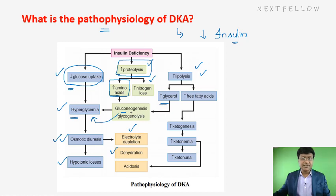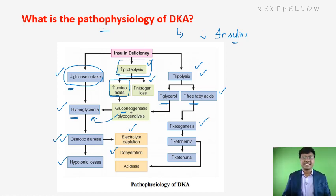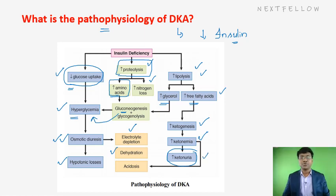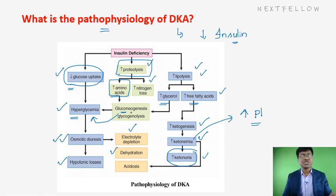On the lipolysis side, there is an increase in glycerol levels and free fatty acids. These free fatty acids undergo beta-oxidation, leading to ketogenesis. The ketone bodies formed are acetone, acetoacetate, and beta-hydroxybutyrate. These ketone bodies appear in the urine causing ketonuria, and their increase in plasma is called ketonemia.